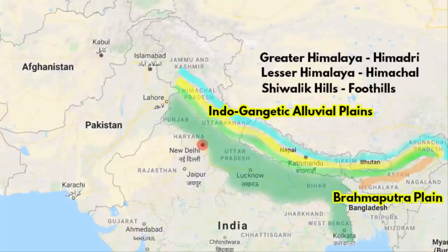A good example is the North Indian Plain. Rivers like the Indus and Ganga have been depositing their sediments in the northern plains for over thousands of years. In the North East of India, the Brahmaputra Plain, or the Brahmaputra Valley in Assam, is another example of how the river Brahmaputra has been depositing sediments for thousands of years.